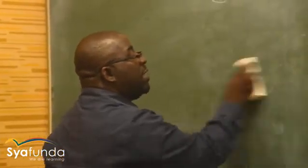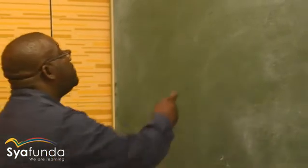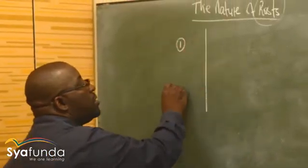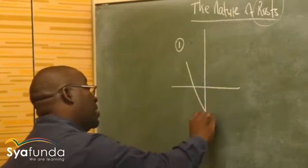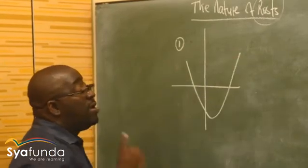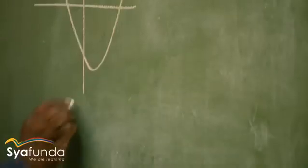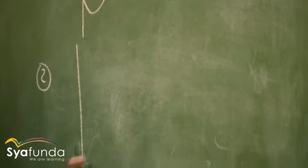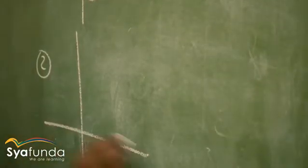The nature of roots can come out in three ways. Number one: the graph can behave in this form — like the one we just showed. Number two: the graph can also behave in this particular form. Number three: the graph can also behave in yet another form.